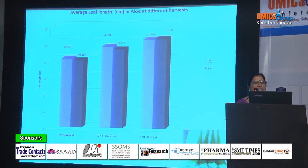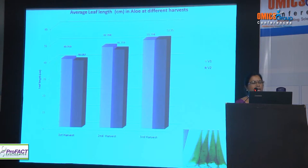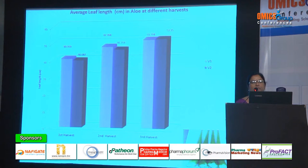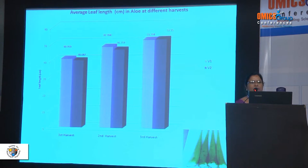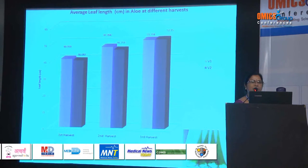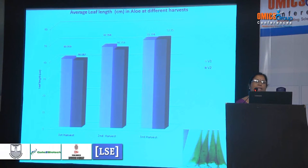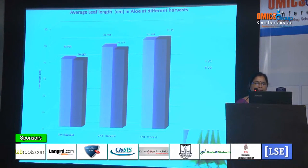Aloe usually takes about 10 months for the first harvest, and thereafter another harvest every 3 months. I took the first harvest at 10 months. I recorded data on leaf length, leaf width, number of leaves per plant, weight of each leaf, gel weight of each leaf, and yield per plant and per hectare.